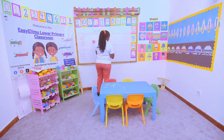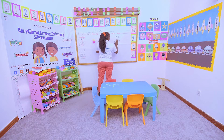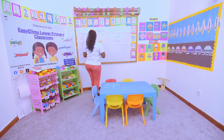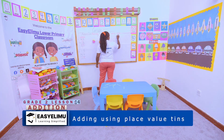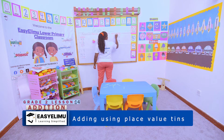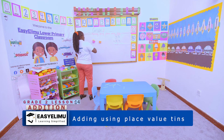What if I have been given a question like this: 53 plus 60 plus 44? I come to my place value teens. The first thing is to identify the place value of each number — this is ones and this is tens. Once you identify the place value of each number, you will be able to work it out.